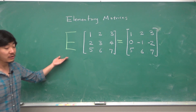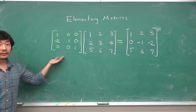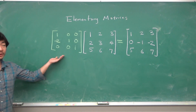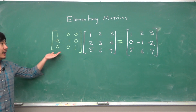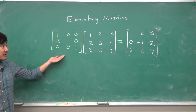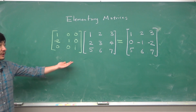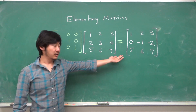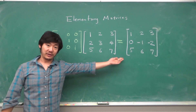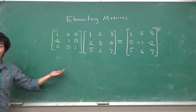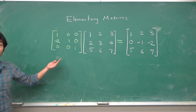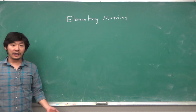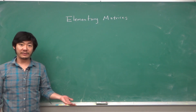How can we get this elementary matrix? Well, if you multiply by this matrix then you will see that you get this matrix on this side. I urge you to carry out the computation to double check.